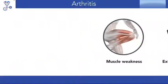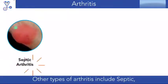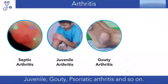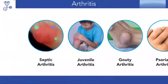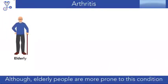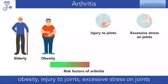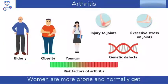Rheumatoid arthritis also leads to the development of rheumatoid nodules. Other types of arthritis include septic, juvenile, gouty, and psoriatic arthritis. Although elderly people are more prone to this condition, obesity, injury to joints, excessive stress on joints, and genetic defects are also large contributors.